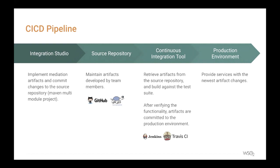Now let's look at the CI-CD pipeline overview we'll be implementing today. Any CI-CD pipeline begins with development — we'll use WSO2 Integration Studio for this stage. After development, we commit artifacts to a common location allowing collaboration; tools such as GitHub and SVN can be used. Upon committing, we move to the continuous integration stage where we retrieve artifacts from the source repository using tools such as Jenkins and Travis CI. Finally, we deploy the built artifacts into the production environment, completing our pipeline.